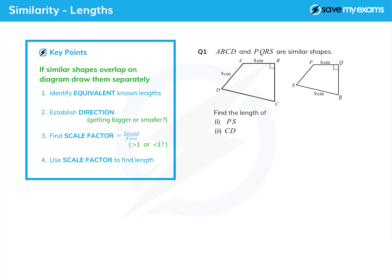Let's do this first question. There's no overlap between the shapes so we can just use them as they are. Those two lengths are equivalent, so let's mark those. For part one let's establish which way we're going. We're trying to find PS and we know AD, so we're going from the bigger shape to the smaller shape. We need to find the scale factor, which is always the second length over the first length. We're expecting that to be less than one because the shape is getting smaller. So we do six over eight.